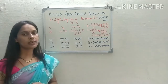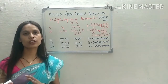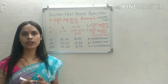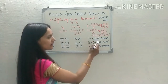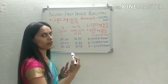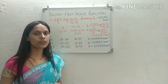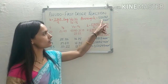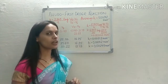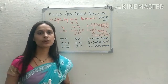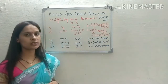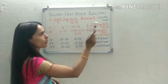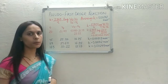We have to find the average velocity constant. We add all the K values and divide by 4. The average velocity constant comes out to be 0.00312 min⁻¹. So the average rate constant for this reaction is 0.00312 min⁻¹.